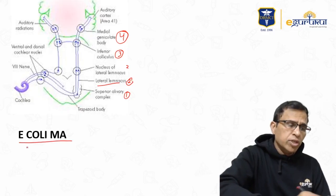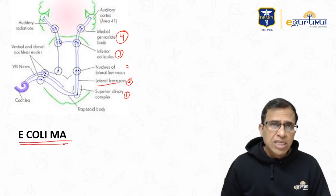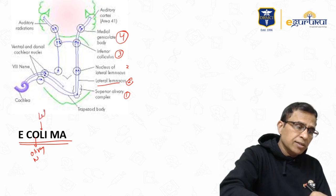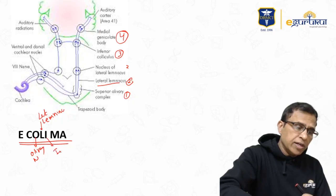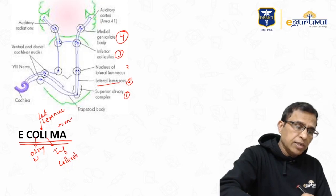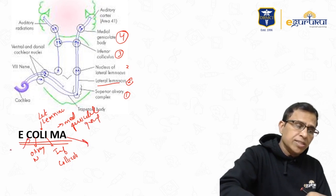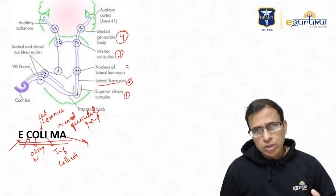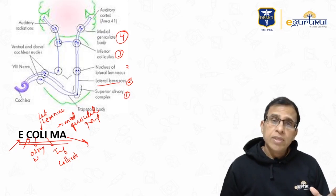There is a very common mnemonic given in many books: E-COLIMA. O stands for olivary nucleus (superior olivary nucleus), L stands for lateral lemniscus, I stands for inferior colliculi, and M stands for medial geniculate ganglion. A is auditory pathway, C is cochlear nucleus, and E is the eighth nerve. This is a pretty common question from the ENT point of view.